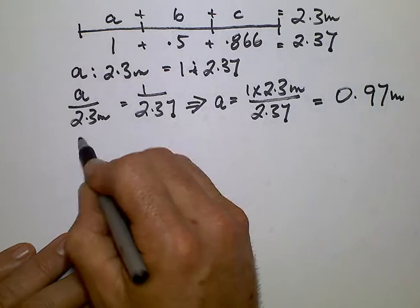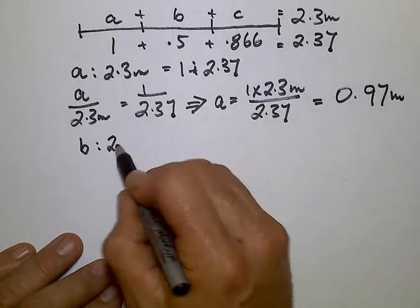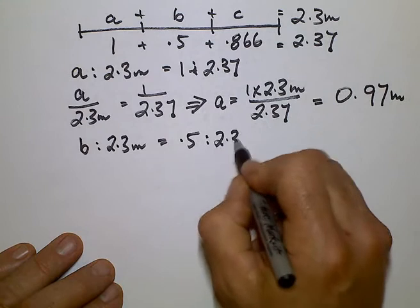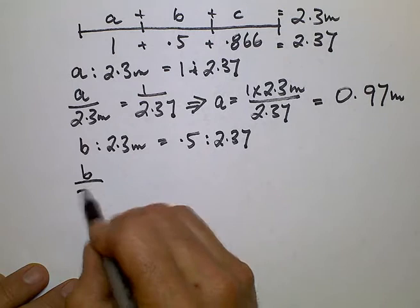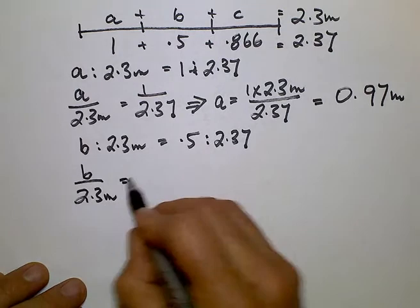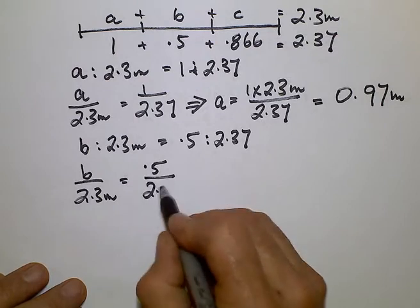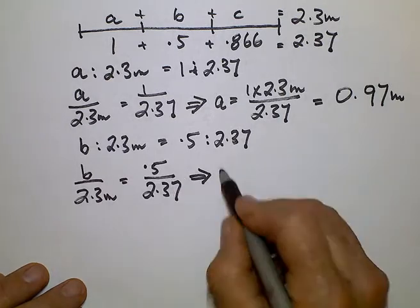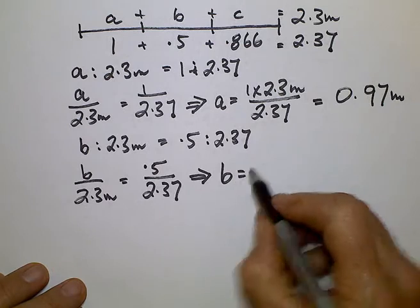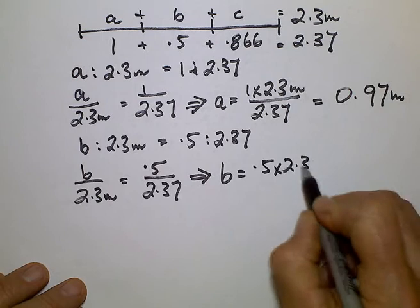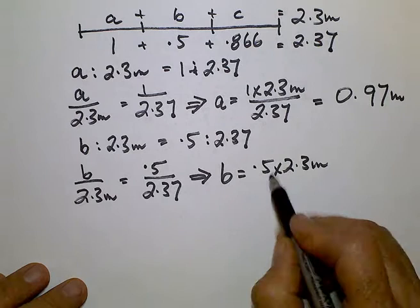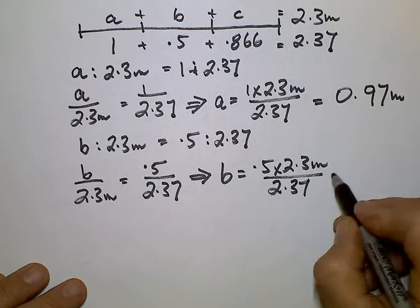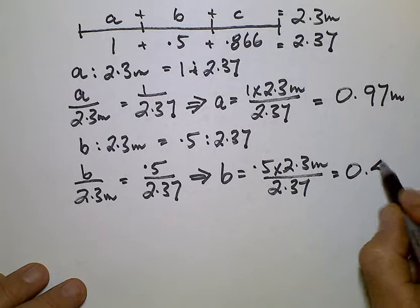Let's do the same for B. The proportion of B to the total length is equal to its ratio to the total of the ratios. Now that's the same as writing B divided by 2.3 metres equals 0.5 divided by 2.37. We transpose 2.3 over to the other side of the equation to separate B by itself so we can calculate it. So that becomes 0.5 times 2.3 metres divided by 2.37. If it's divided on that side, it becomes times on that side. And that calculates to B, the length of B is 0.49 metres.